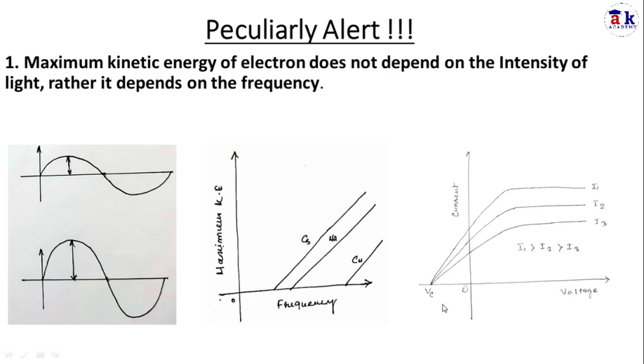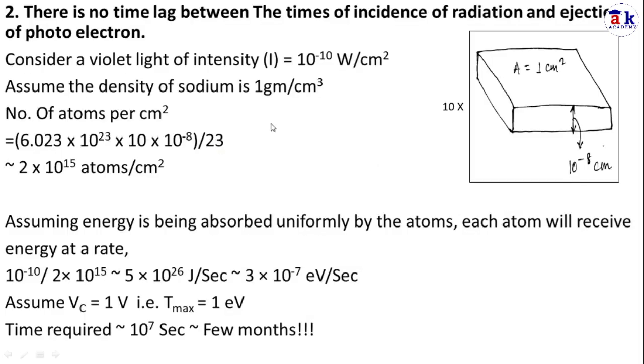What we are observing is that the maximum kinetic energy of the electrons is not increasing, rather the current is increasing. The current increases because the number of electrons increases, but the maximum kinetic energy of the electrons is not increased. Obviously the number of electrons increases so current increases, but the pattern remains the same.